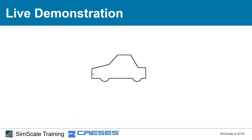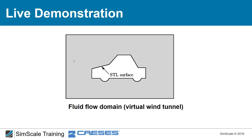Let's revisit the meshing process. Imagine a simplified car shape — first we need a fluid flow domain, giving the computer the boundaries of the area around the object we care about. We create a virtual wind tunnel. We don't simulate the car geometry itself, but the grey region of air around it. We then create a background mesh and SimScale refines the mesh around the object, removes the interior, refines the outer volume, and snaps to the surfaces.